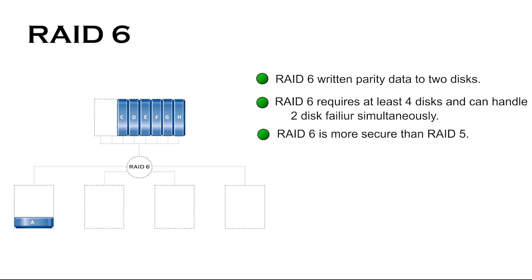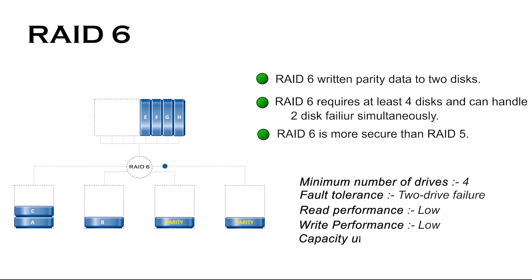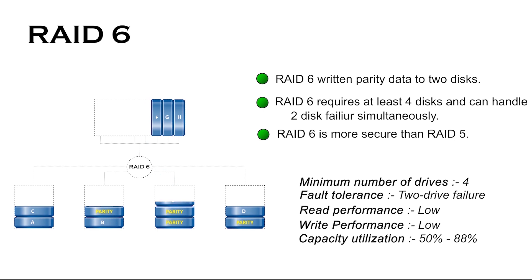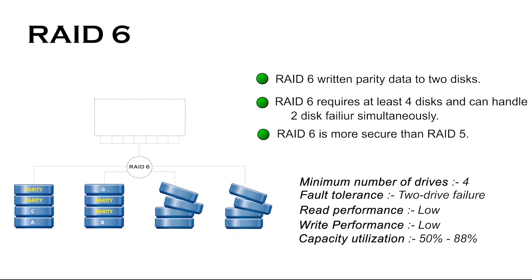RAID 6 is a system that combines efficient storage with excellent security and decent performance. It takes the concept of RAID 5, but the parity data are written to two disks. That means it requires at least four disks and can handle two disk failures simultaneously. If two disks fail, you still have access to all data even while the failed drives are being replaced. So RAID 6 is more secure than RAID 5.